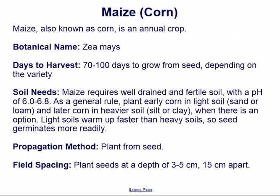Maize. Maize, also known as corn, is an annual crop. Botanical name: Zea mays. Days to harvest: 70 to 100 days to grow from seed, depending on the variety.